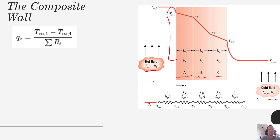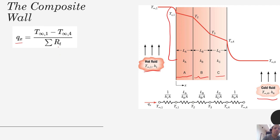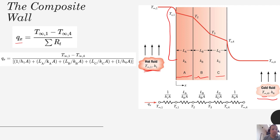Heat is going to be leaving this hot fluid and getting into the cold fluid. We can quantify that total flow of heat by summing up the total thermal resistance — all five of these, two of convection and three of conduction — to get the total thermal resistance. Then we can quantify the total flow of heat by just looking at the two temperatures on the extreme ends, without needing to know all of the intermediate temperatures.